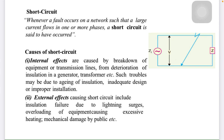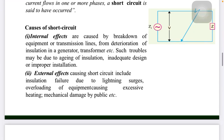For external effects, as mentioned earlier, the best example is when trees in the rainy season come into contact with cables, possibly due to a conductive atmosphere, causing a short circuit. This includes insulation failure due to lightning surge, overloading of equipment causing excessive heating, and I²R loss increasing as heat. Mechanical damage is also part of external effects.